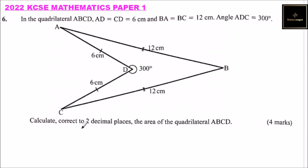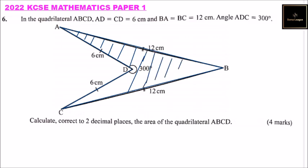We are asked to calculate, correct to two decimal places, the area of the quadrilateral ABCD. So what we need is the area of this quadrilateral. We have sides AB, BC, CD, and DA. I can shade it like that — that is the area we are required to calculate.